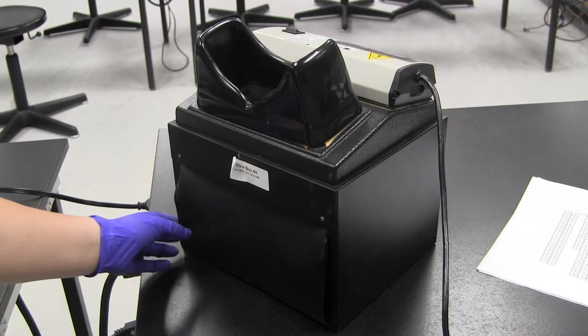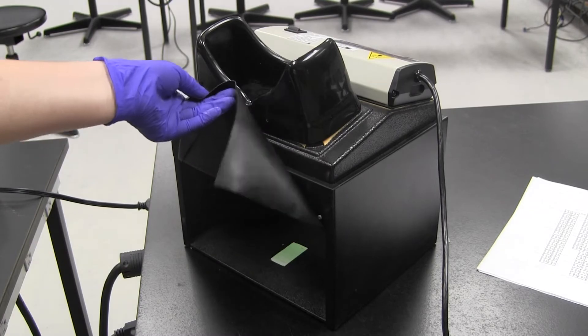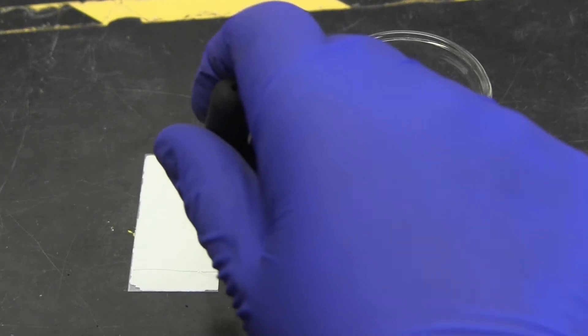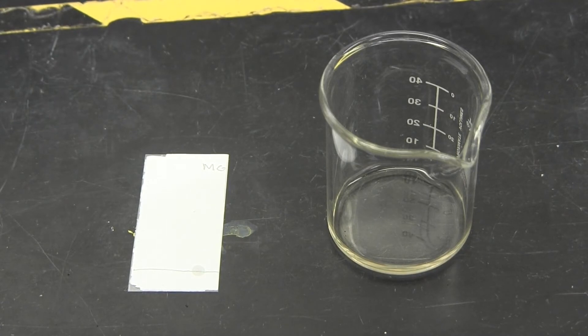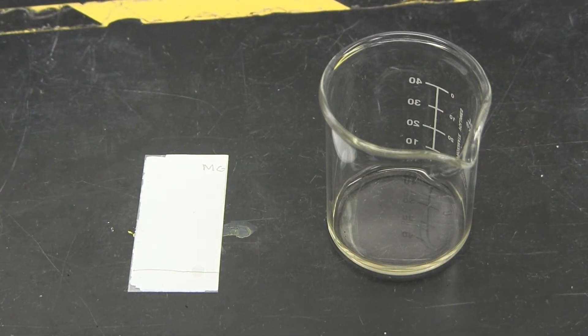Look at the plate under UV light to make sure you have enough unknown on the plate before running it in the TLC chamber. If there is a noticeable dot under the UV, you are ready to test your TLC plate. If you cannot easily make out the dot, place more of your unknown on it using the capillary tube. This is a plate with too little unknown, and here is one with too much unknown.